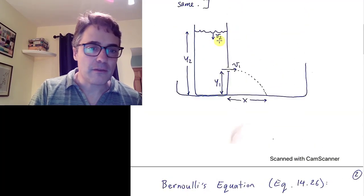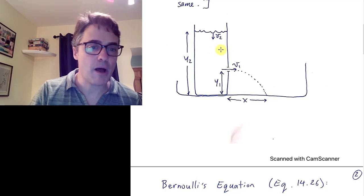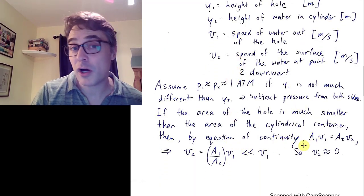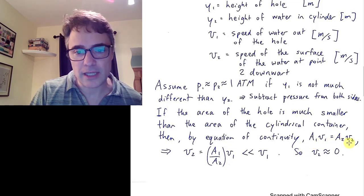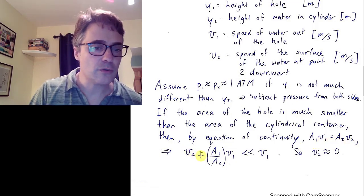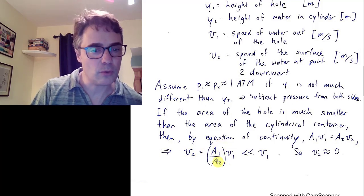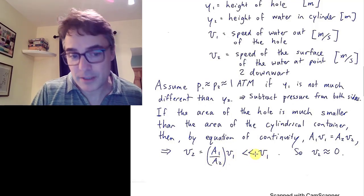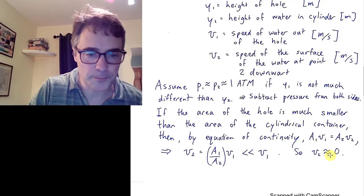One thing to notice is that the area of this little teeny hole could be much smaller than the cross-sectional area of the whole cylinder. If you look at the equation of continuity, which was earlier in chapter 14, A1 V1 equals A2 V2. So V2 will be the ratio of the area of the hole to the whole cylinder times V1. It's much, much less than V1. So we're going to assume the speed of that surface going downwards is about zero.